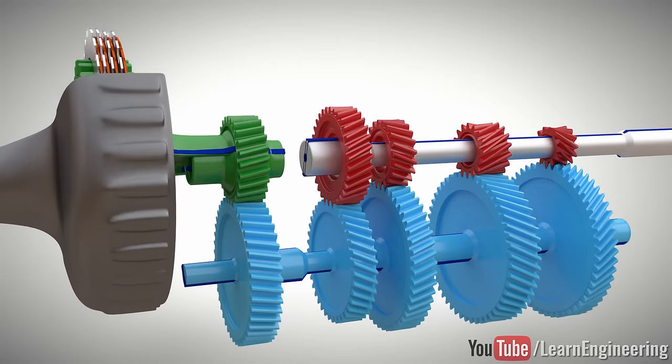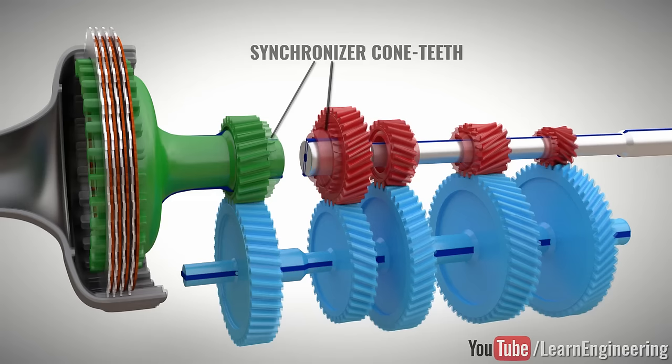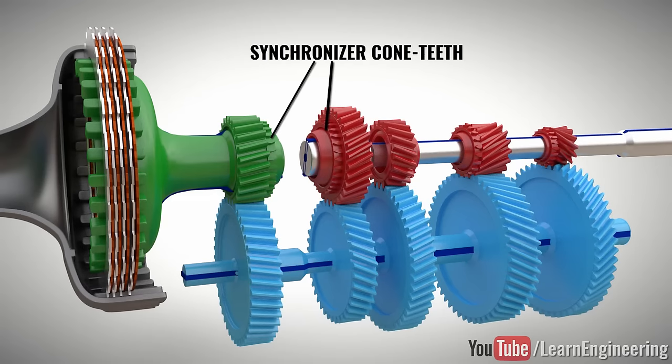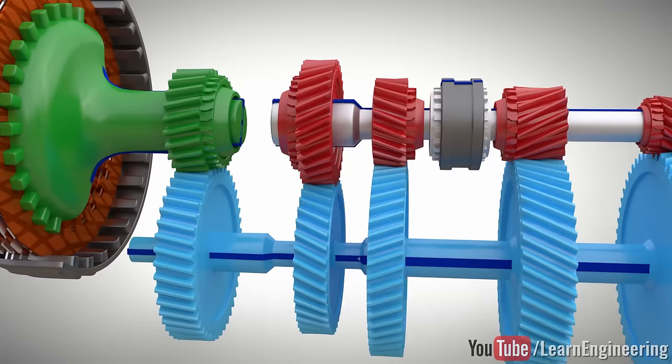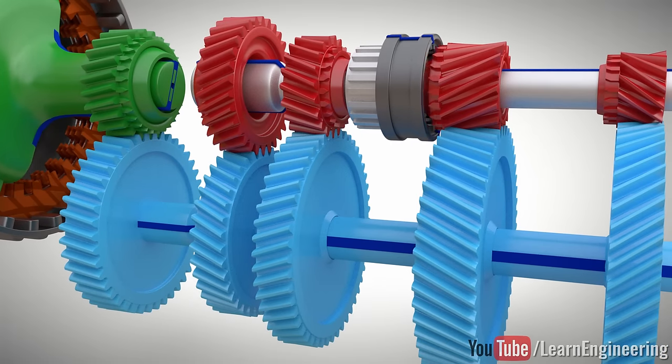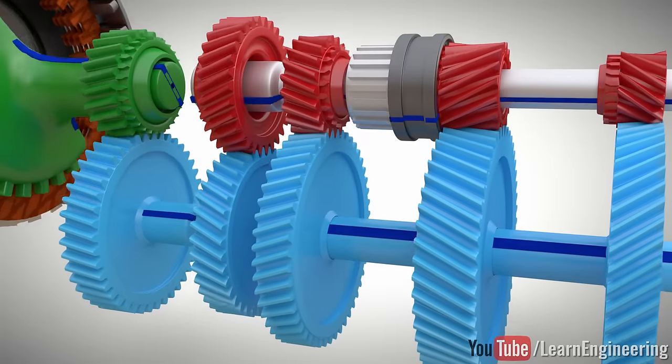For this, the main shaft's gears have a synchronizer cone-teeth arrangement. A hub is connected to the shaft, and a sleeve slides over it. Just by moving this sleeve, you will be able to connect the gear and shaft.